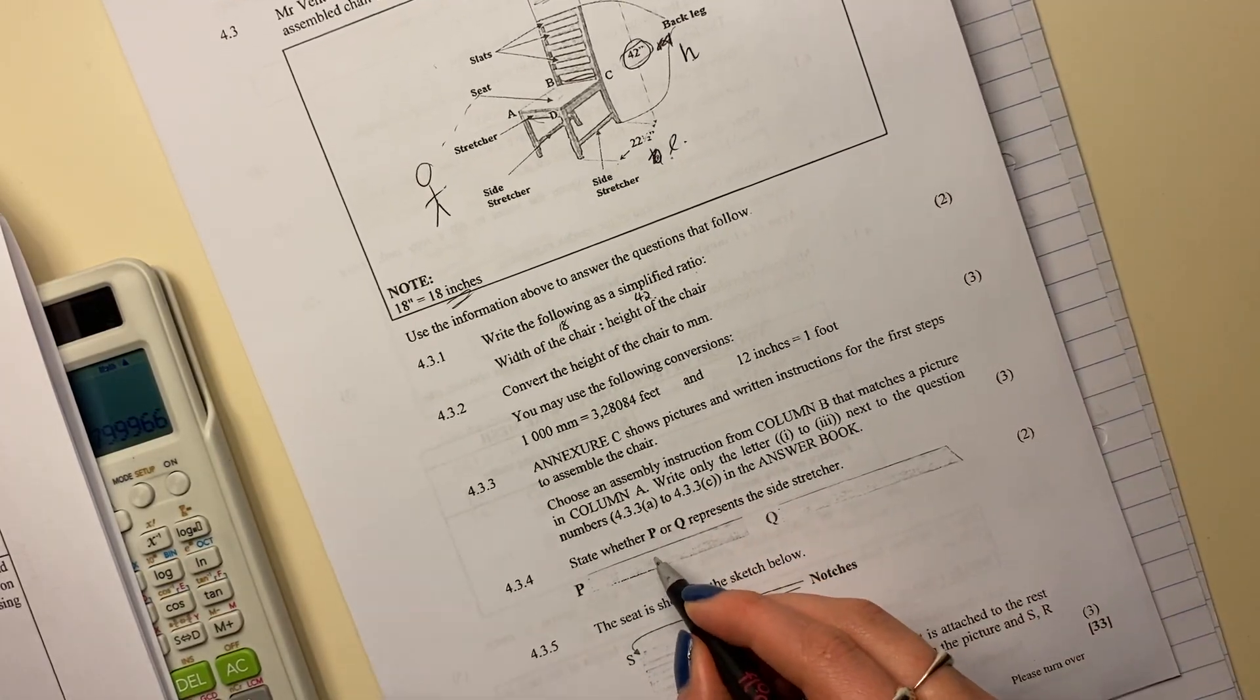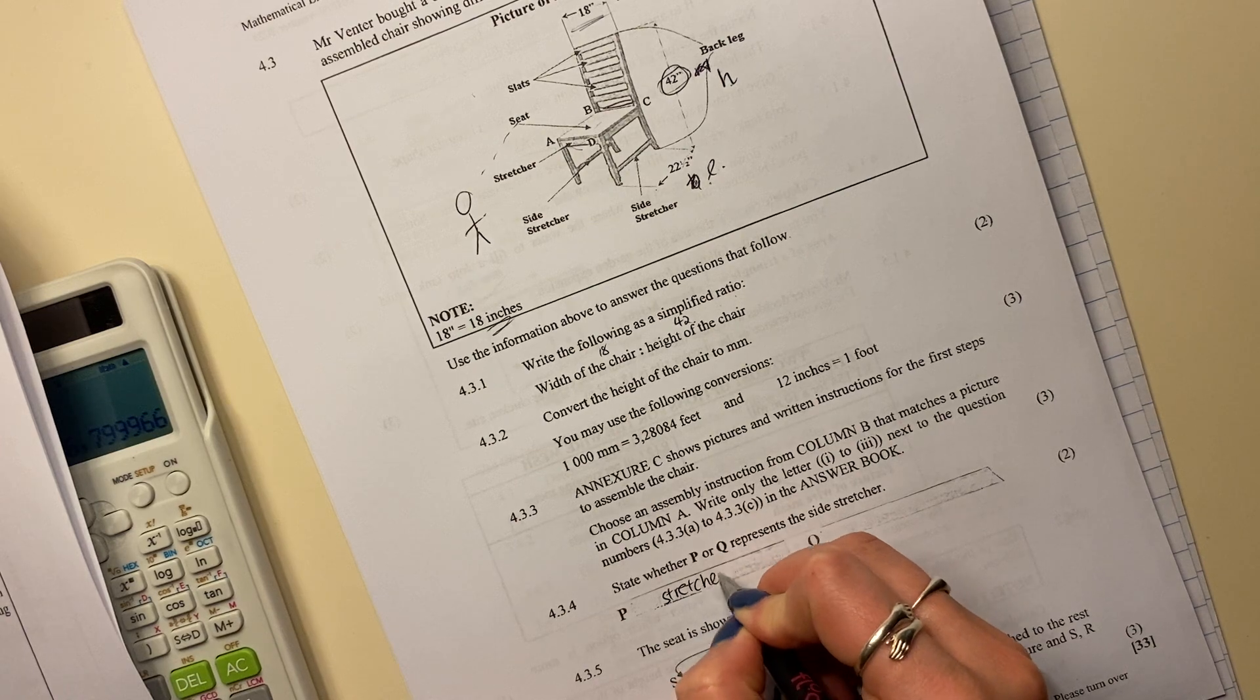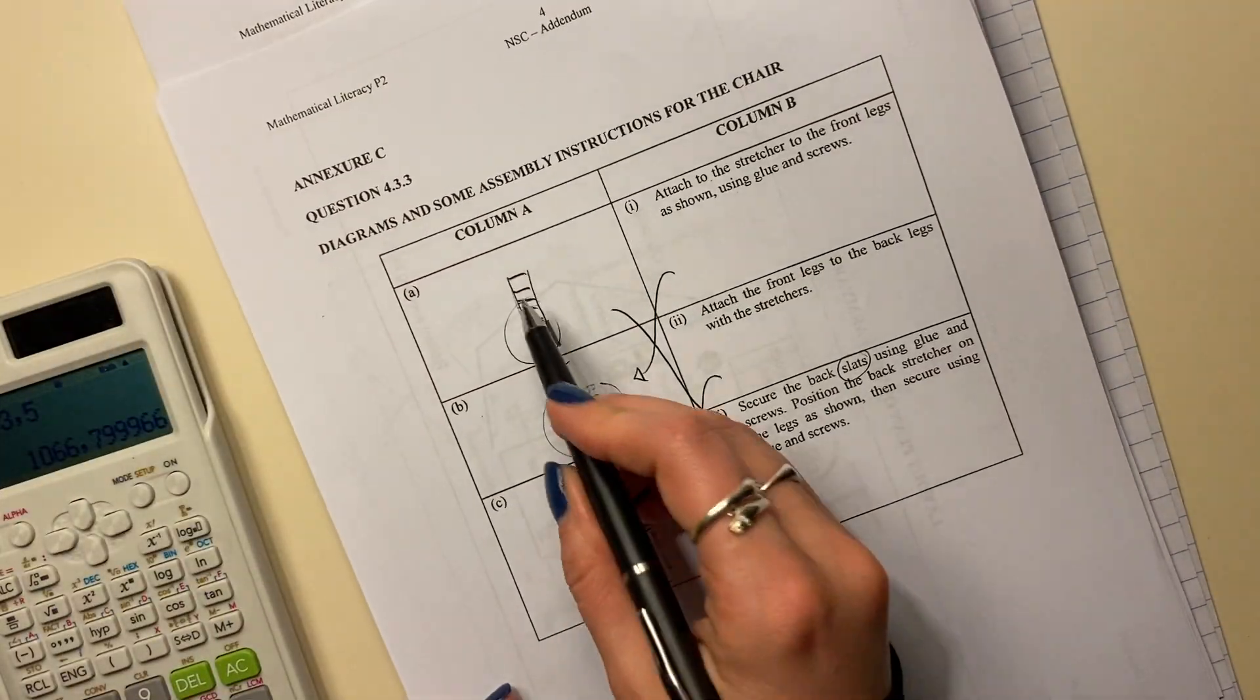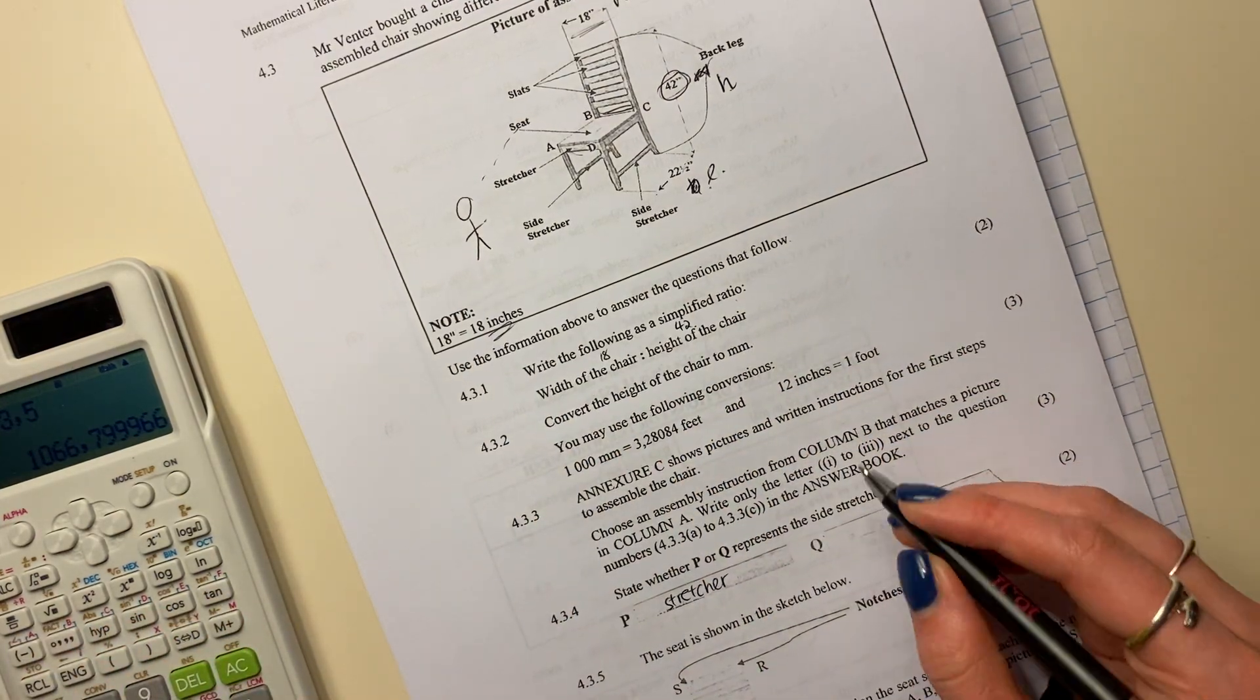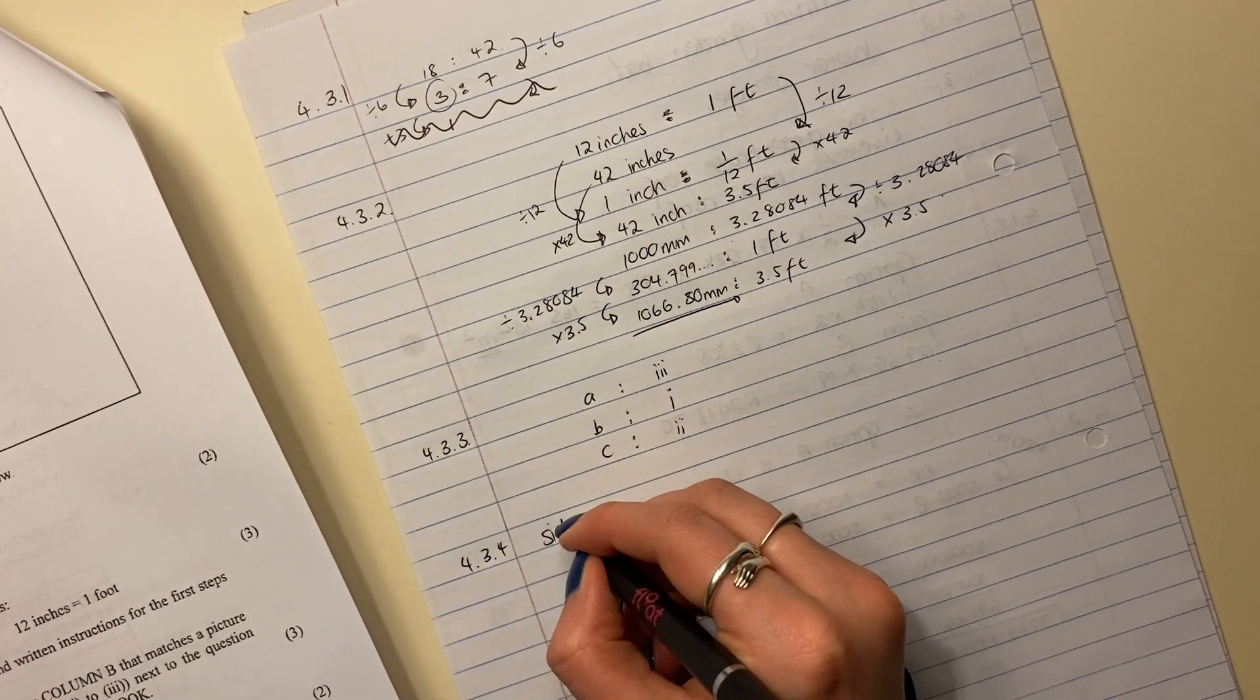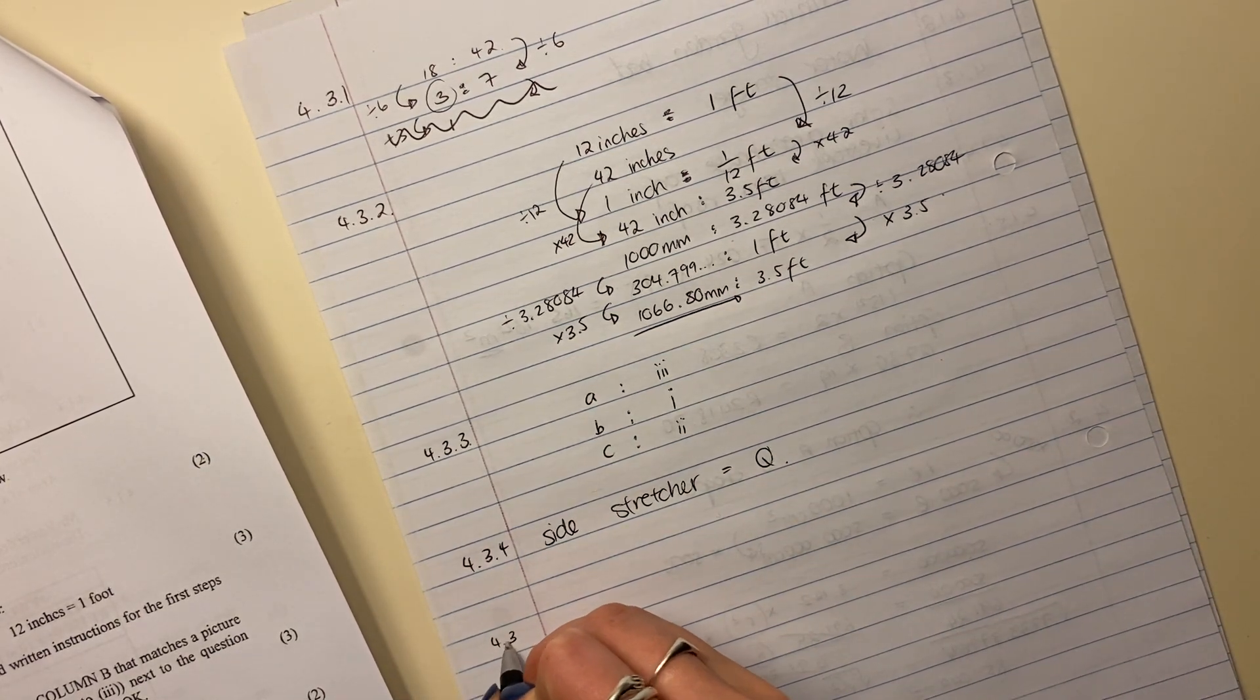Then it says state whether P or Q represents the side stretcher. Now for me, these ones are just the normal stretchers. That's a normal stretchers. I would assume, and how do I know that's a normal stretcher? Well, look at all of these in all of the representation, the side stretchers are just like these normal little like ruler looking things. So I would say that it's probably Q because these are just normal stretchers. And because it said that they're different, I'm thinking that it's that one. It's kind of like a process of elimination being a detective here. So side stretcher equals Q. That's what I would say.